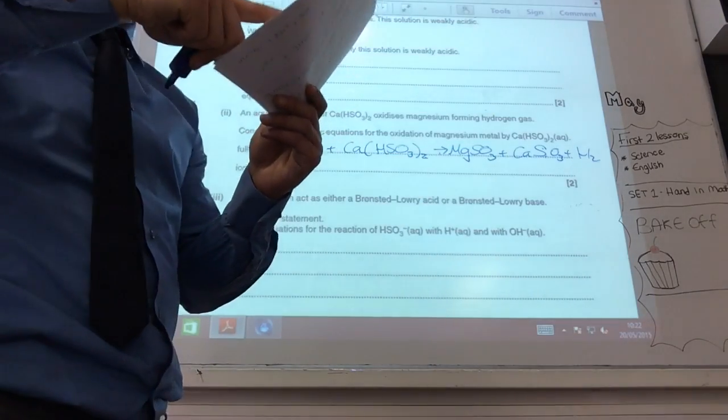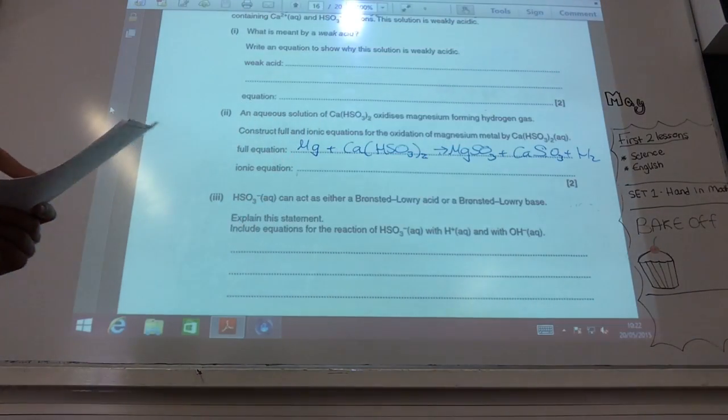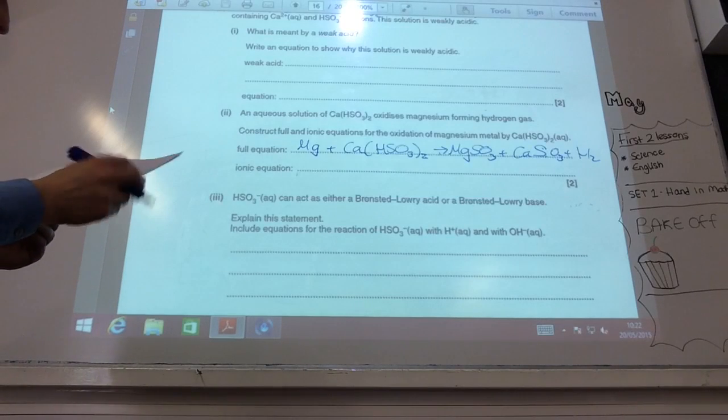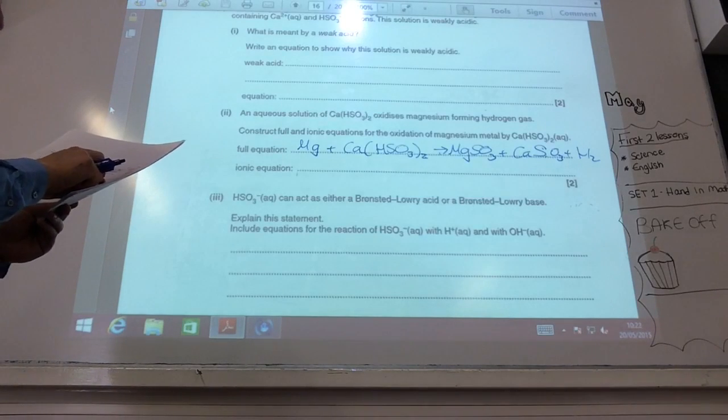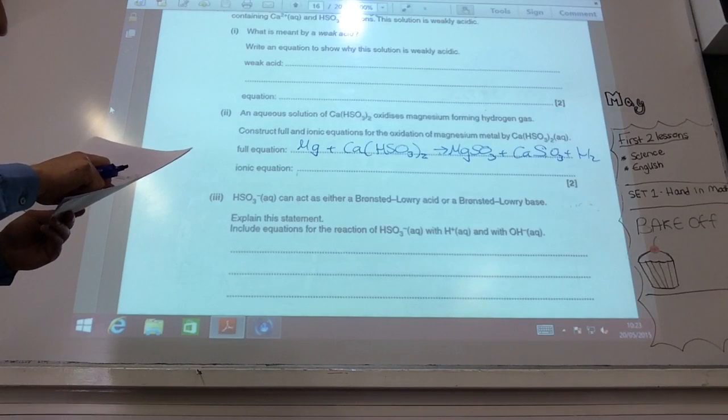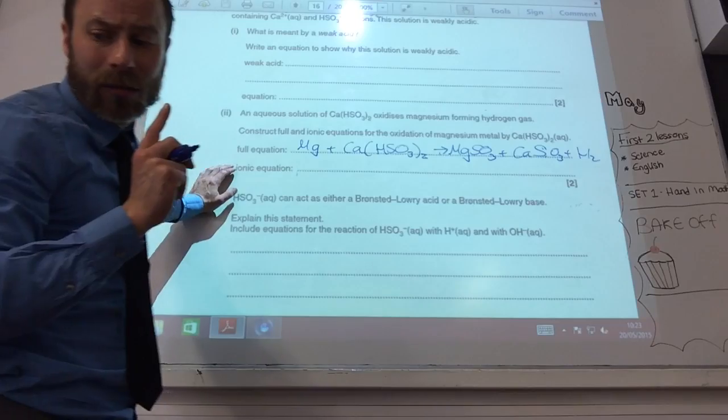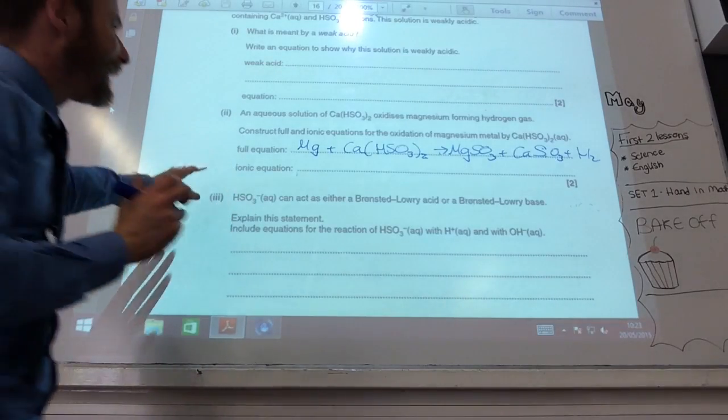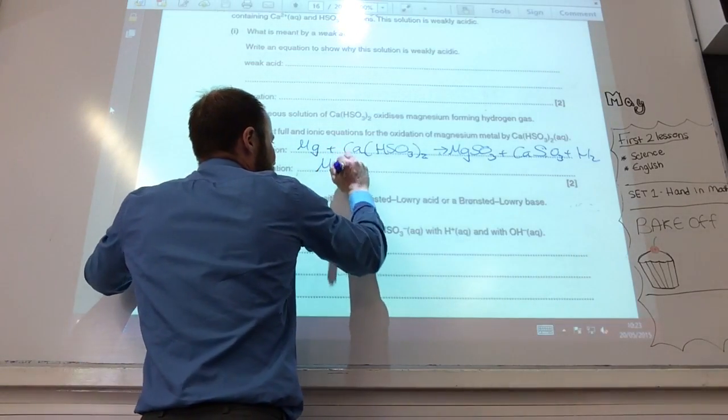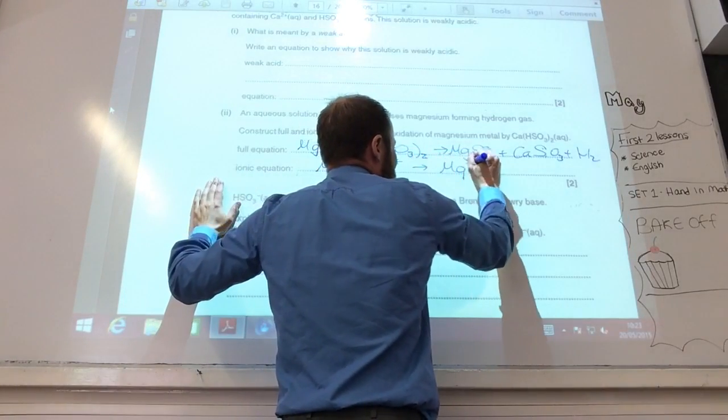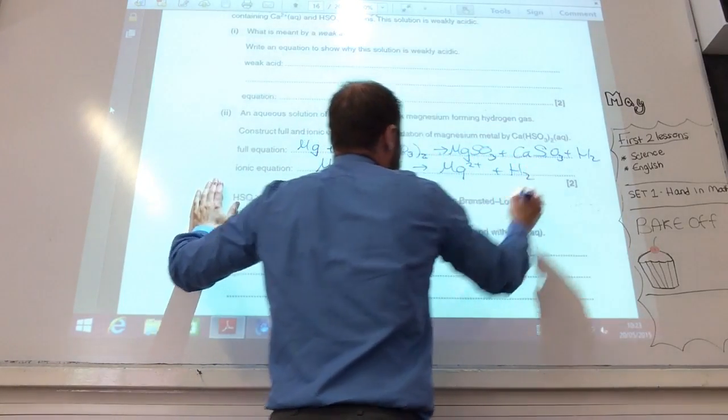There are different ways. You could just have to see it. You can't cross it out. The ionic equation is just magnesium reacting with H+ ions to give you Mg2+, plus hydrogen gas.